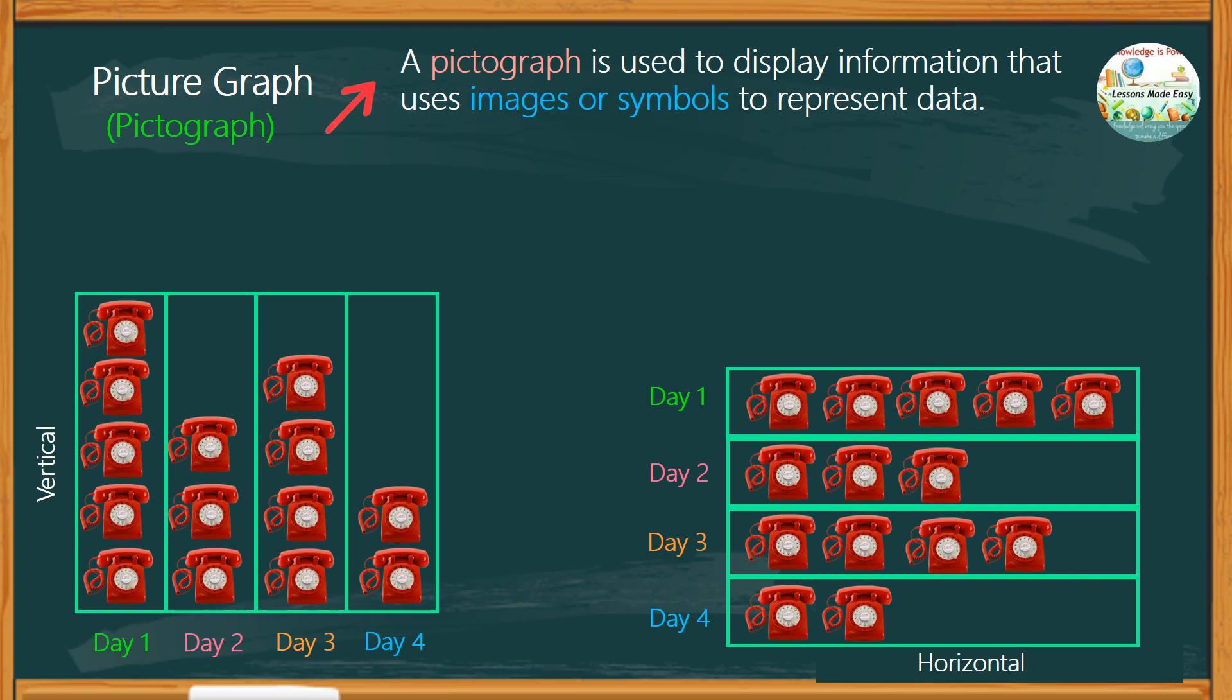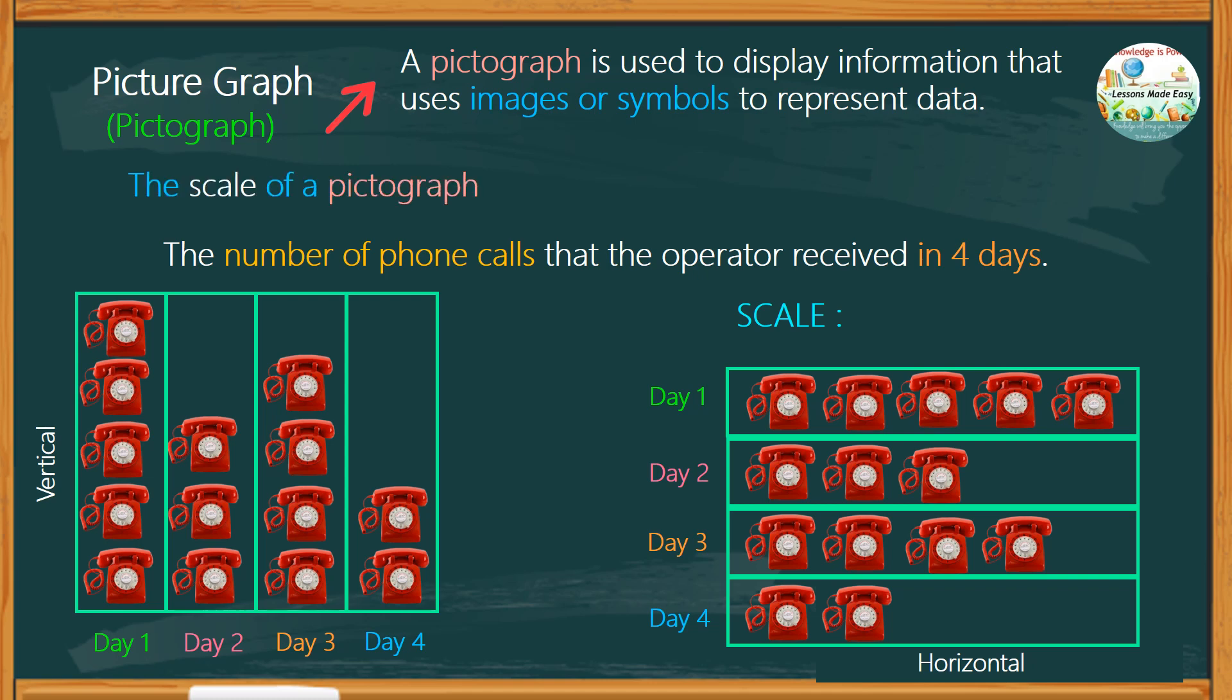Both of the graphs show exactly the same information about the number of phone calls that the operator received in 4 days. Since a graph uses pictures, it is advisable to use a scale. The scale of the picture graph is the number that a symbol represents. In this graph, one picture is equal to 100 phone calls.